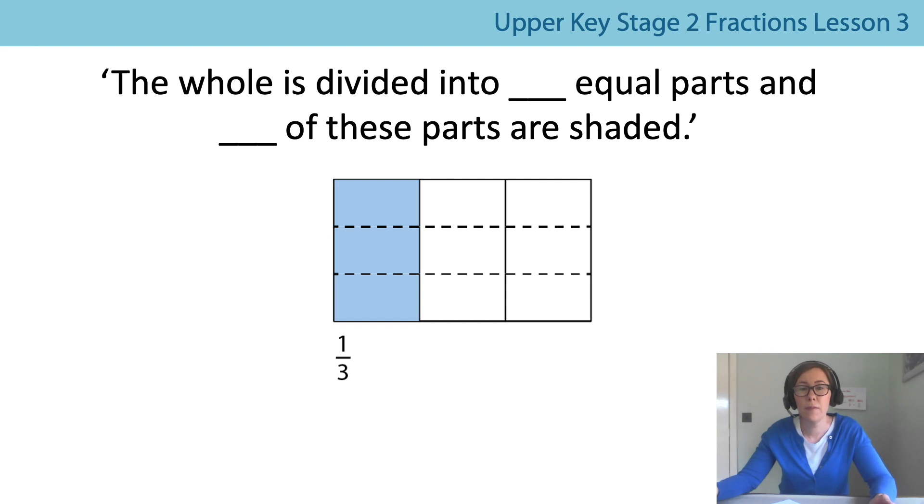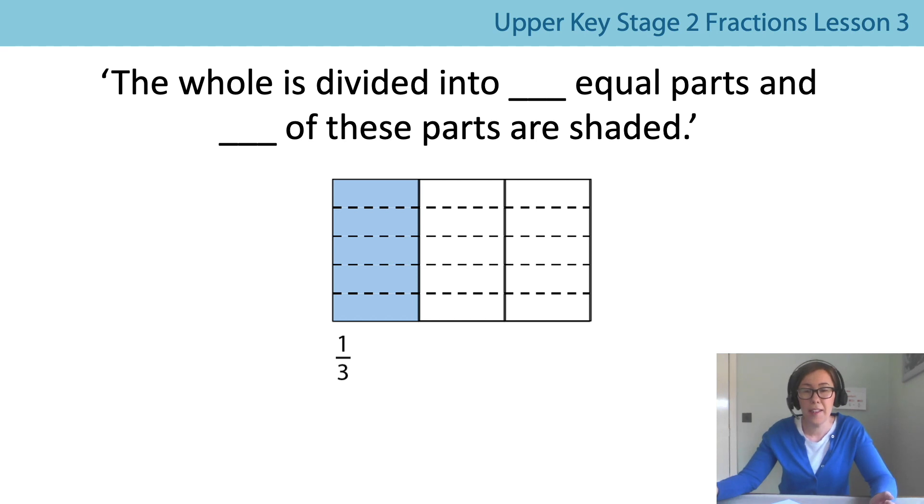Let's try again. The whole is divided into nine equal parts and three of these parts are shaded. Three out of nine, three ninths. And then here's another one. The whole is divided into 12 equal parts and four of them are shaded. Finally, this one we've definitely come across before. One third is the same as... if you can remember our teddy bears, that will tell you what this one is. 5/15, well done.